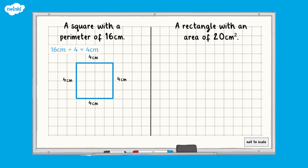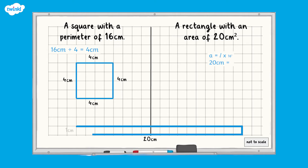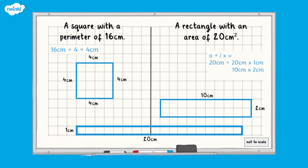To draw a rectangle with an area of 20 centimetres squared, we need to remember that area is equal to length multiplied by width, so L × W must equal 20 centimetres squared. If L is 20 centimetres, then W must be 1 centimetre. If L is 10 centimetres, then W must be 2 centimetres. And if L is 5 centimetres, then W must be 4 centimetres.